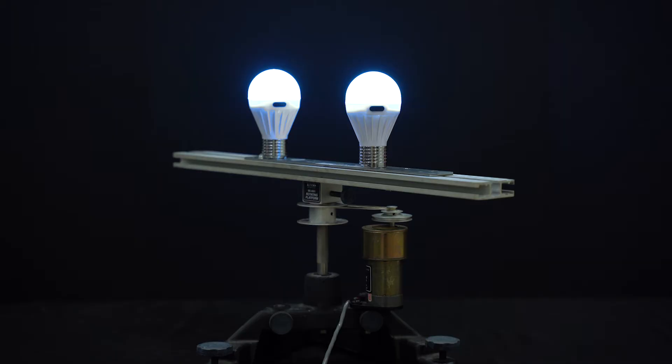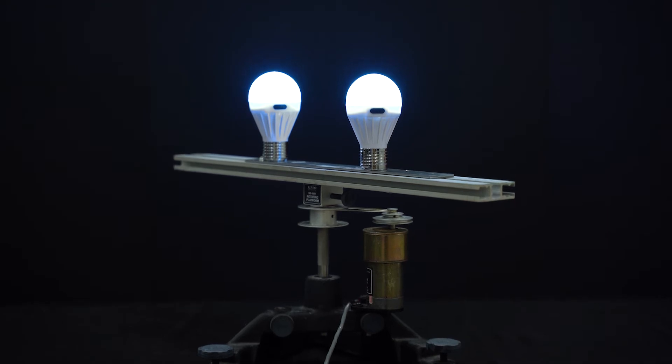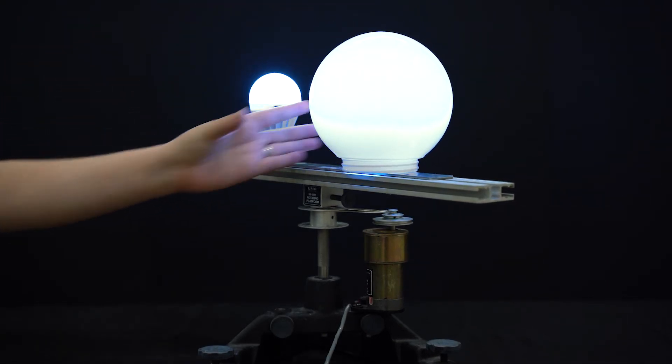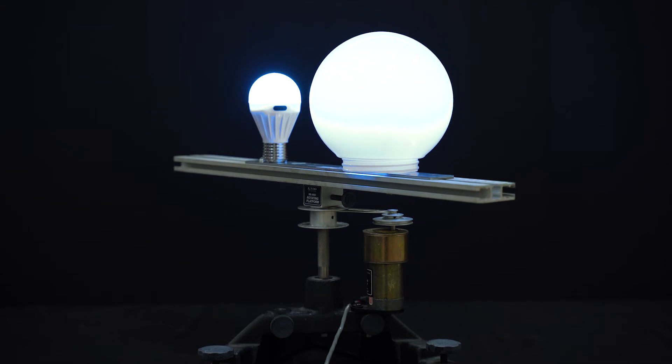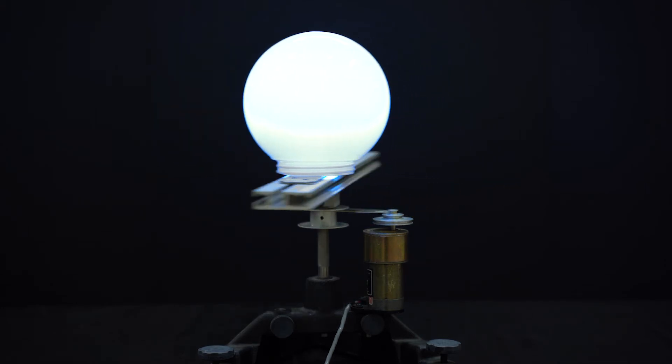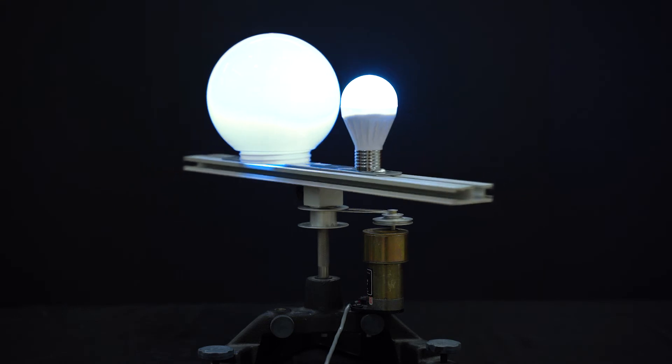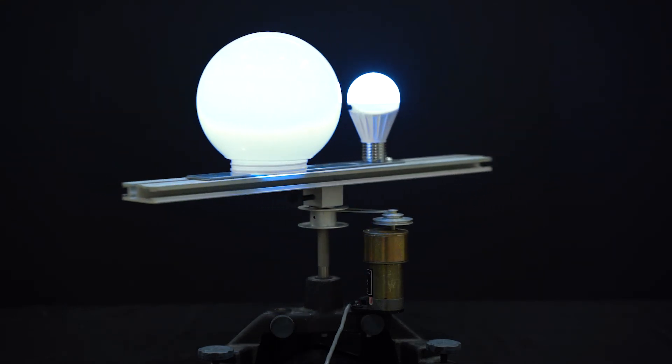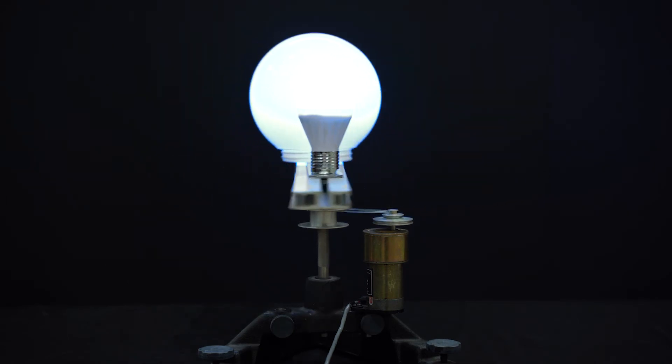We now explore another common class of variation where one bulb, or star, is bigger than the other. To accomplish this we'll make use of an acrylic globe commonly used in light fixtures. We place the globe over the top of one bulb, which effectively transforms it into a larger but less luminous light source, and once again start the platform spinning.